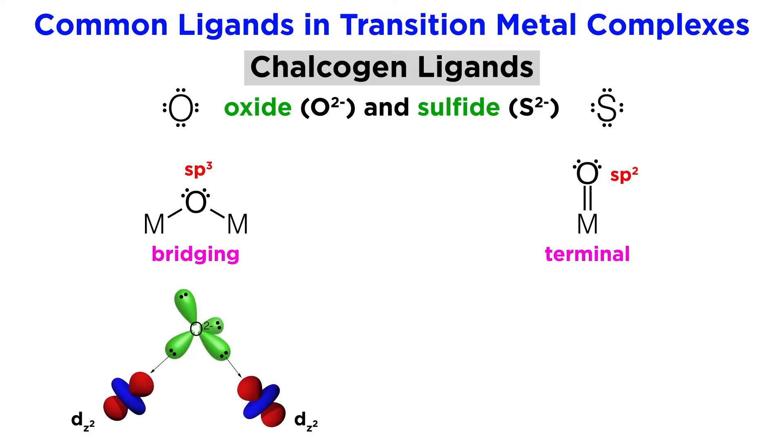In the bridging scenario, the electron pairs are donated into the dz squared orbitals of two different metal atoms, whereas in the terminal scenario the first bond, a sigma bond, is oriented this way as well, while the second bond, a pi bond, occurs due to overlap of the unhybridized p orbital on the oxide with the dyz orbital on the metal. This is essentially a double dative bond.